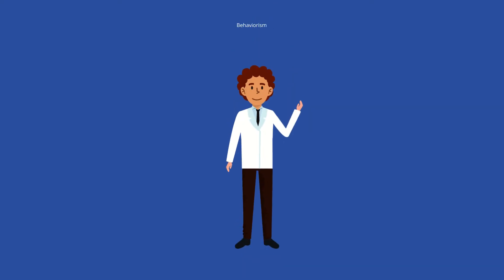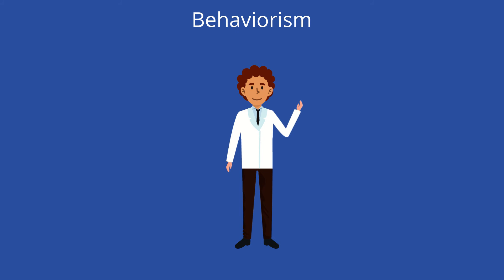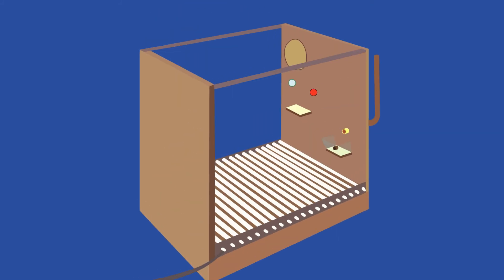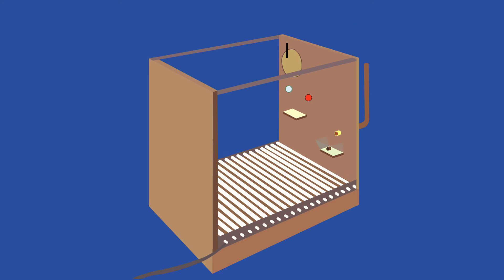Skinner was a psychologist who belonged to a school of thought called behaviorism, which posited that studying people's actions is a more effective way to understand the inner workings of the mind than directly inspecting the mind itself. Thus, in the 1930s, Skinner developed a piece of lab equipment, now known as a Skinner Box, which he would use for experiments that tested and analyzed animal behavior.